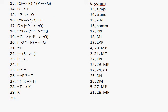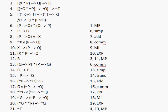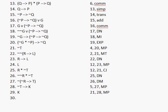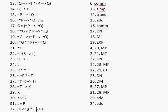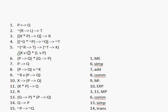Now I have K and I have L. Our conclusion is K or Q and L or P. So I'm going to get K or Q through 29 addition, and I'm going to get L or P through 24 addition. And now I'm going to get K or Q and L or P through 30, 31 conjunction. And K or Q and L or P is exactly the conclusion we were trying to get.